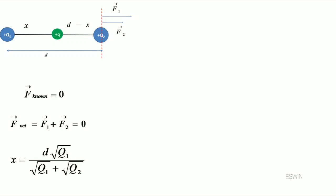We have already found out the value of x in the last video. Now according to Coulomb's law, we can write: q1 q2 divided by 4 pi epsilon-0 d-squared equals minus q2 q divided by 4 pi epsilon-0 times (d minus x) squared. We can cancel out q2 and 4 pi epsilon-0 on both sides, so we get q1 divided by d-squared equal to minus q divided by (d minus x) squared.